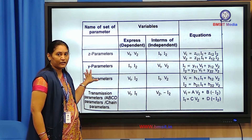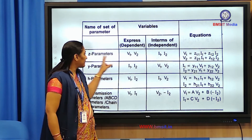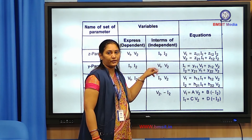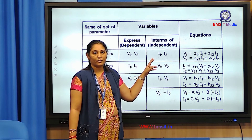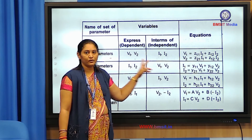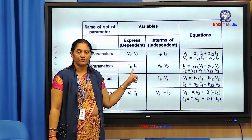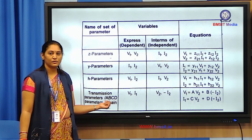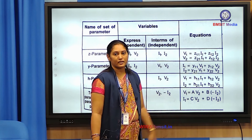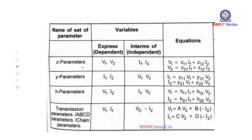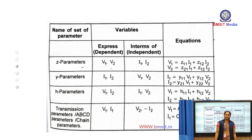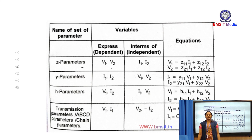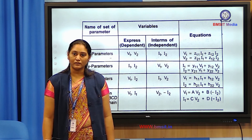In summary, the Z parameter expresses V1 and V2 in terms of I1 and I2; the Y parameter expresses I1 and I2 in terms of V1 and V2; the H parameter expresses V1 and I2 in terms of I1 and V2; and the T parameter expresses V1 and I1 in terms of V2 and −I2. In the next video, we will see the inter-relations between parameters and how to convert one parameter set into another.